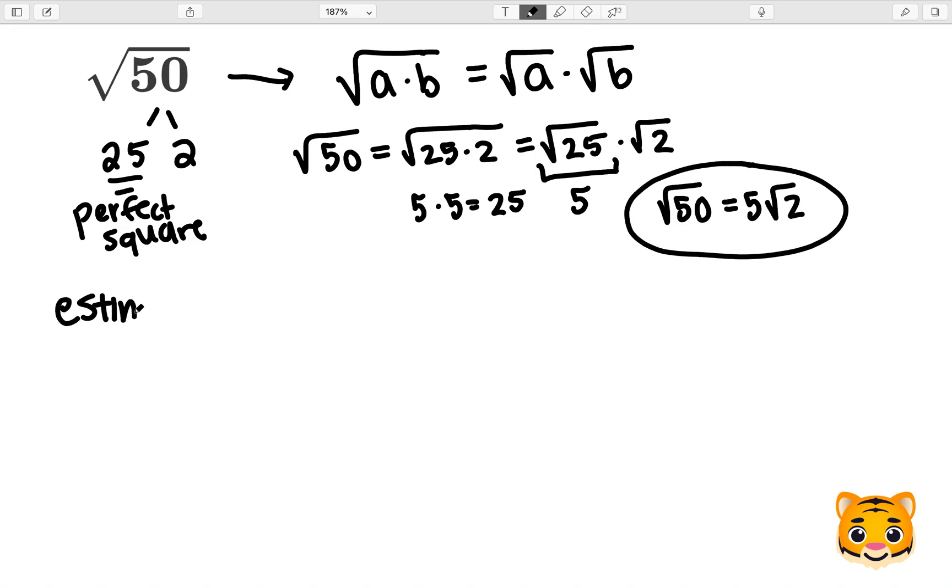We can also estimate the square root of 50 to the nearest whole number by doing the following procedure. We want to look at the perfect squares nearby to 50, so we can try values such as 6 squared, which gives us 36, 7 squared, which gives us 49, and 8 squared, which gives us 64. We can then see that 50 lies between 49 and 64.